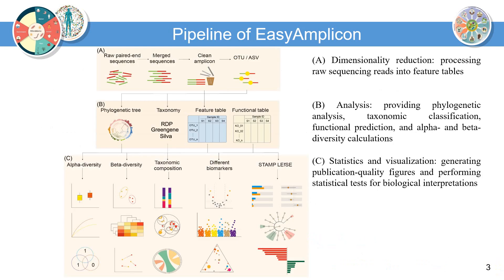Pipeline of Easy Amplicon. It may include three steps. First, dimensionality reduction — processing raw sequencing reads into feature tables. Second, analysis — providing phylogenetic analysis, taxonomic classification, functional prediction, and alpha and beta diversity calculations. Third, statistics and visualization — generating publication-quality figures and performing statistical tests for biological interpretations.